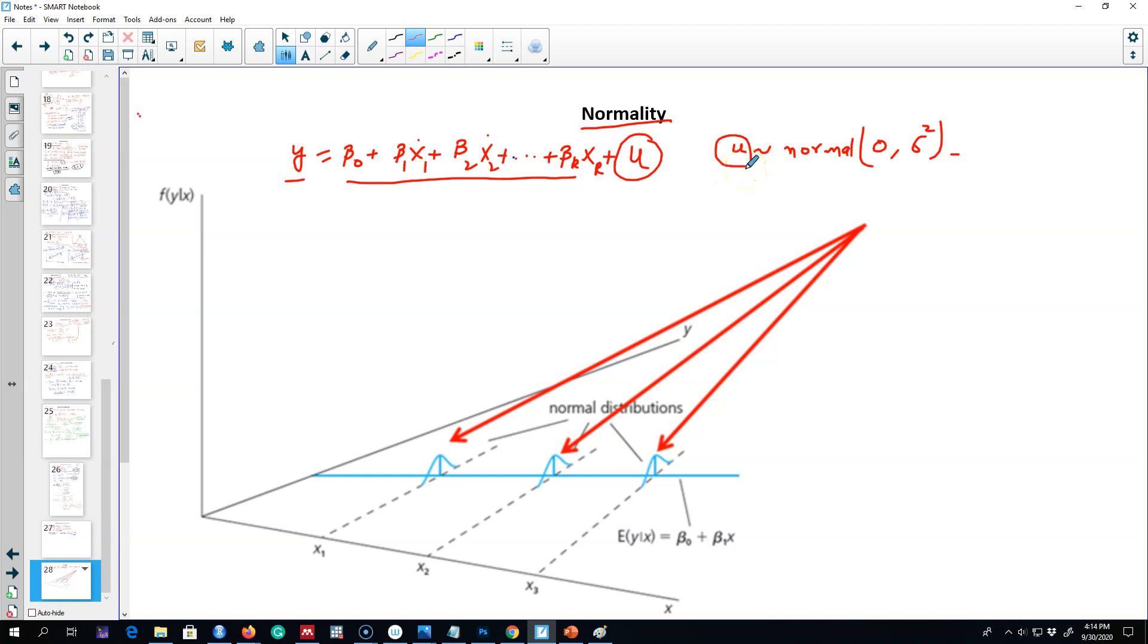This error term represents those unobservable factors. What we are saying is that those unobservable factors are normally distributed around the population regression function. The form and variance of the distribution does not depend on any of the explanatory variables, meaning this error term is normally distributed.